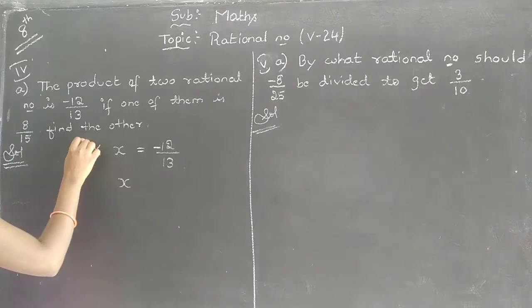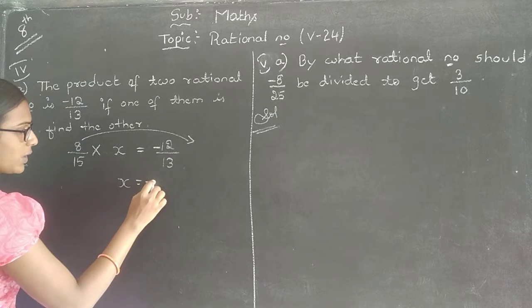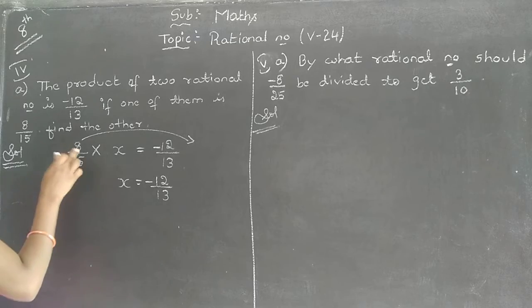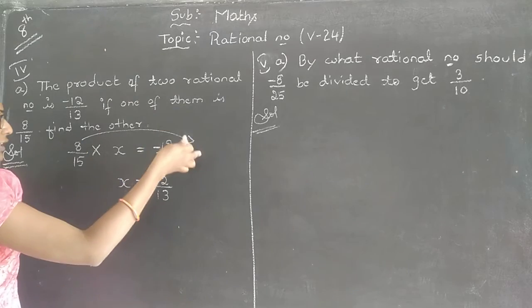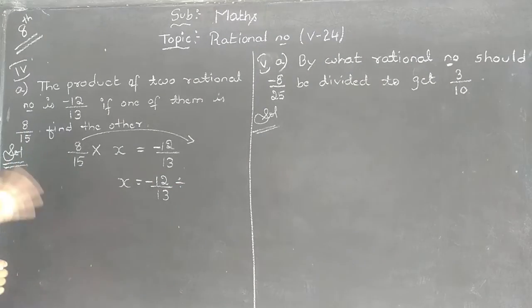I want to find x now. Let me keep it there only. Let me shift this number to this side. If I shift it to that side, now what happens? Minus 12 by 13, it will remain as it is. When it is shifted to the RHS side, it will become divisible. I mean reciprocal.